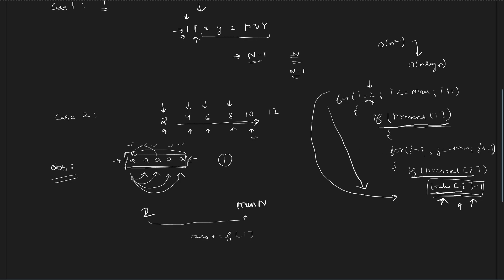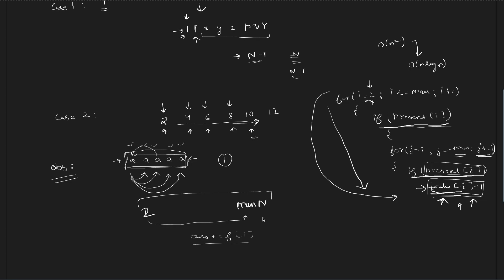We go to all multiples j starting from 2i, with j less than the maximum element and j incrementing by i. If the j-th element is present and j is a multiple of i, we mark take[j] as 1. At the end, we run a loop from 2 to max: if the frequency is greater than 1, we add all of them to the answer; if the frequency is 1, we check take[j] and increment the answer accordingly.